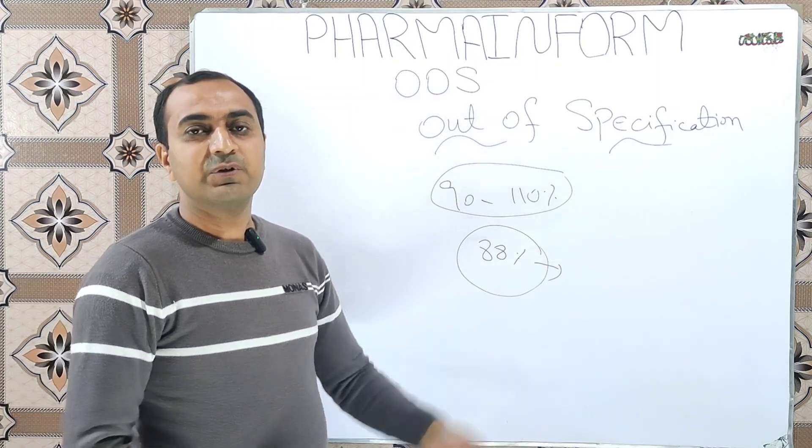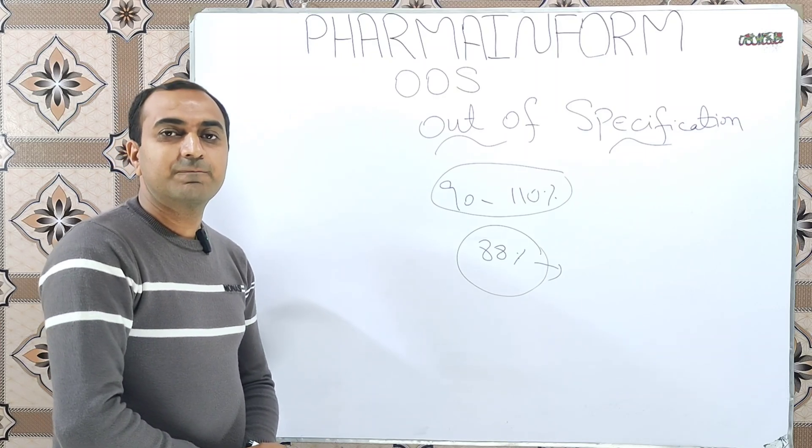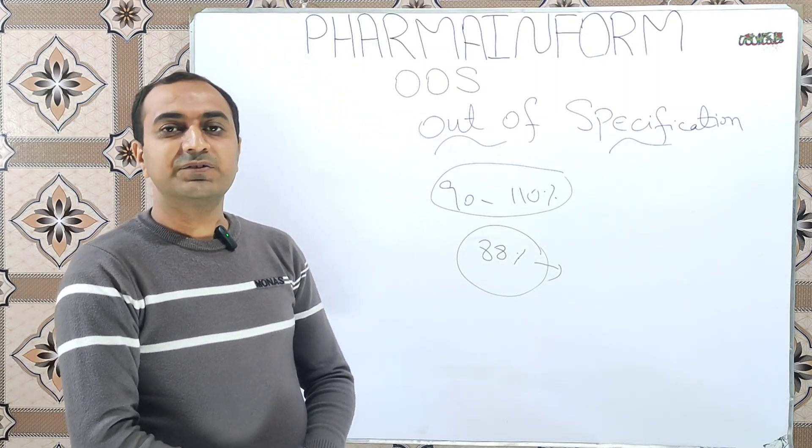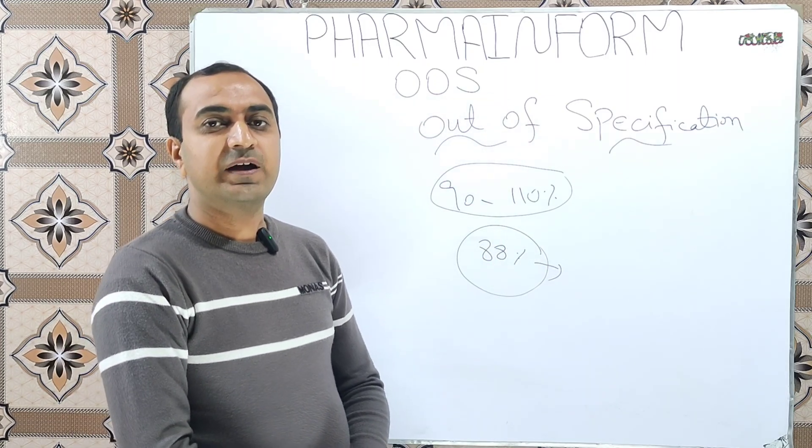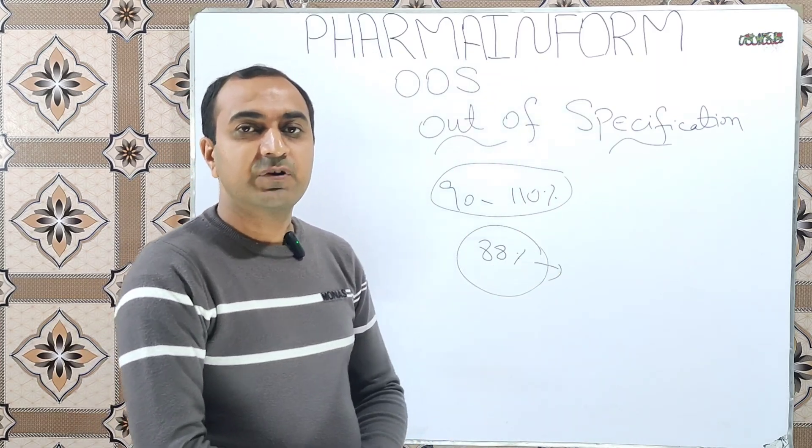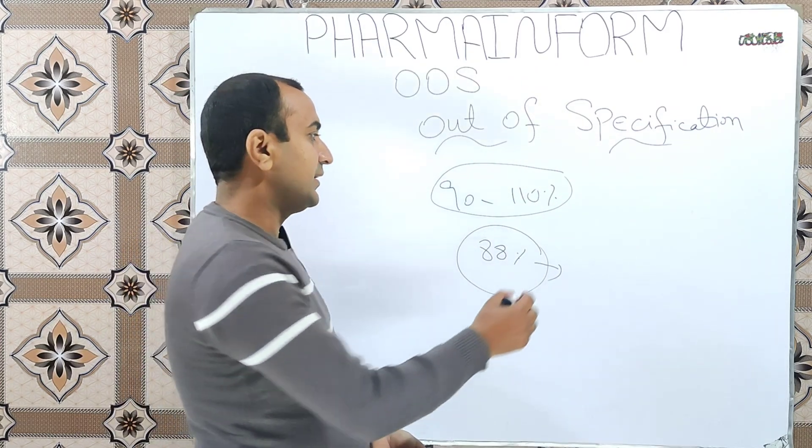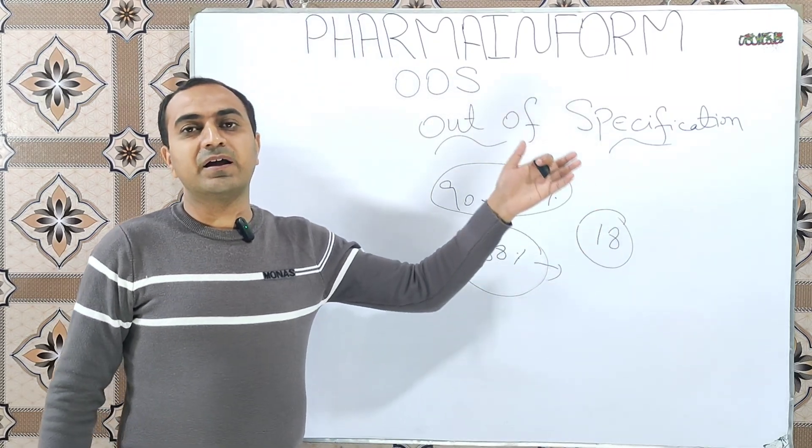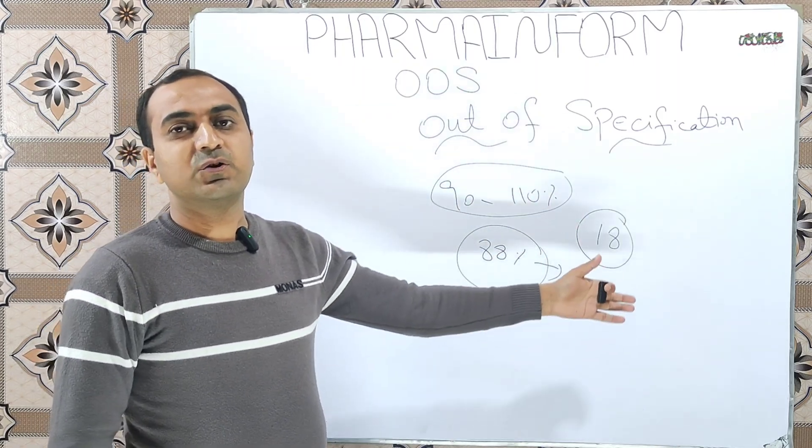Now we will discuss the example of production in-process test. Suppose we are performing disintegration test of a core tablet and our specified time for core tablet must be within 15 minutes, but we find out that our tablet disintegrates within 18 minutes. So 18 minutes is away from the 15 minutes, so this test result of disintegration for product will be out of specification.